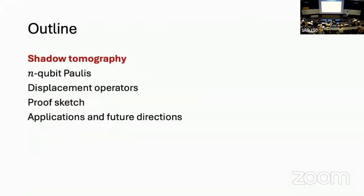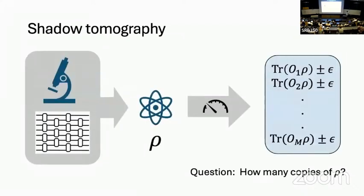Let's start the real talk with an outline of what shadow tomography is. Shadow tomography is a task of this form. I always have to remind people that it's not the same thing as classical shadows — classical shadows is a particular algorithm to solve shadow tomography, but shadow tomography itself is a task. Given copies of an unknown quantum state, we have a list of expectation values we would like to learn, each to precision epsilon. The question is: how many copies of the quantum state do we need to consume?